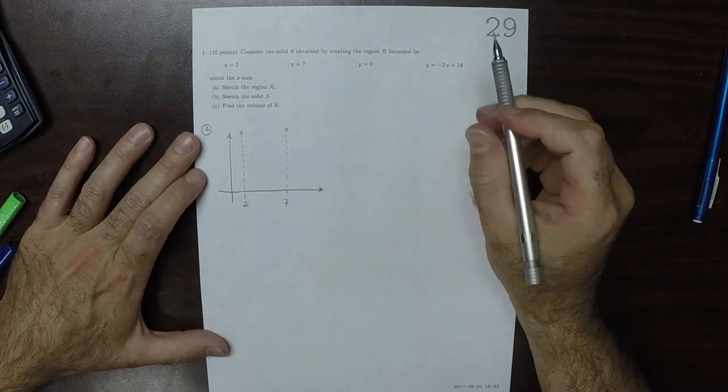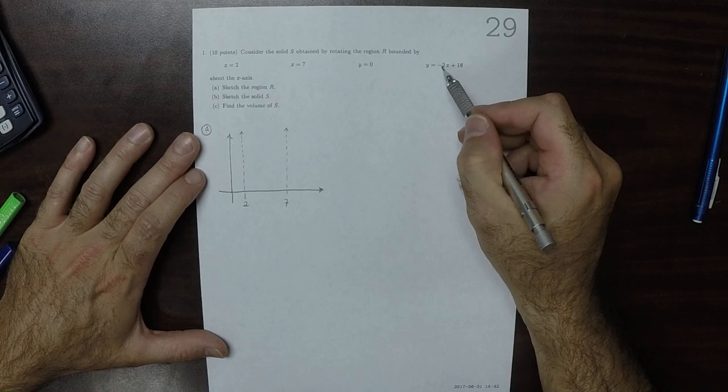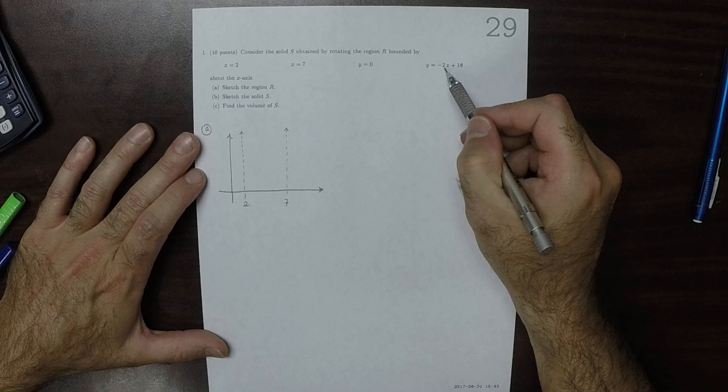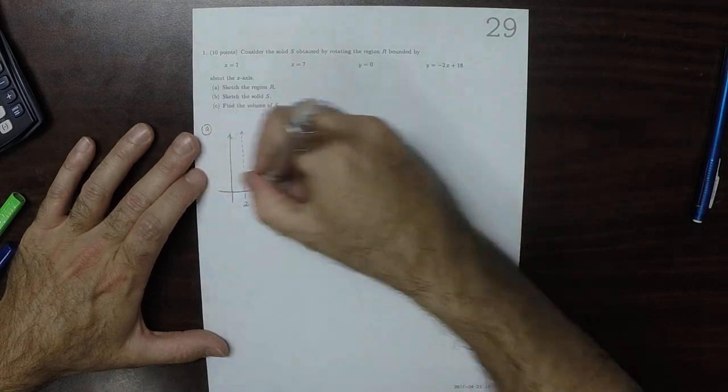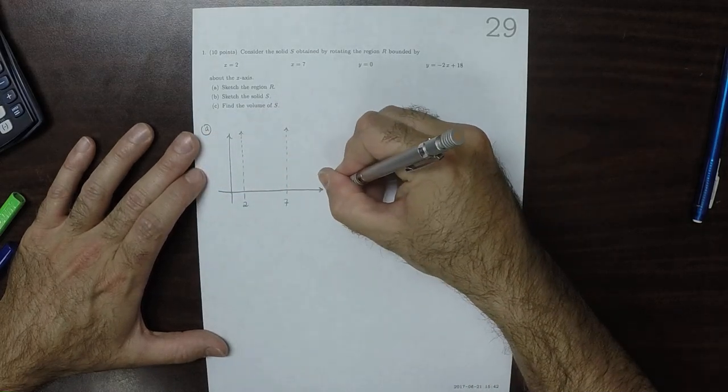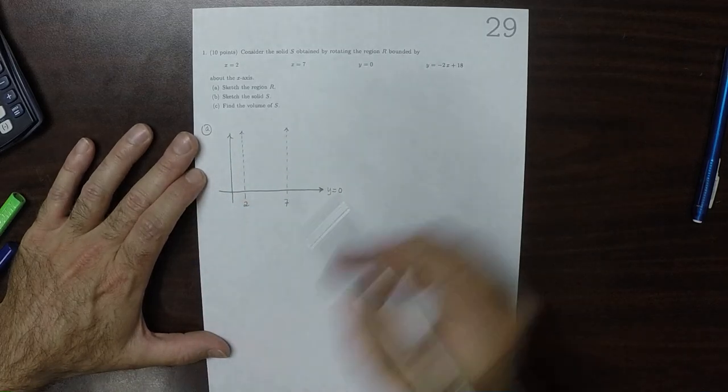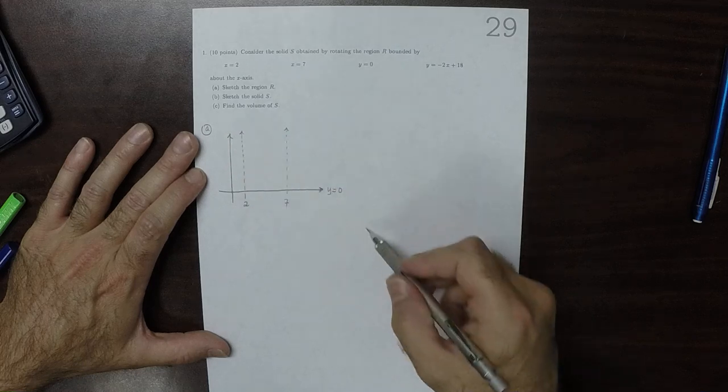And then we've got this. So at x is 7, this line right here is y is equal to 0. So this is one of the lines, and then we have this last line that's sloping down.